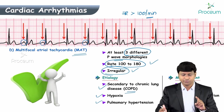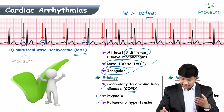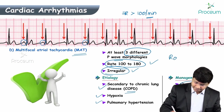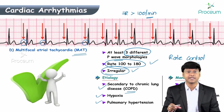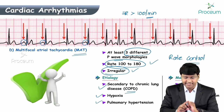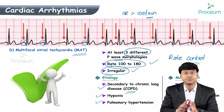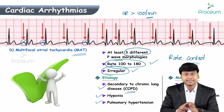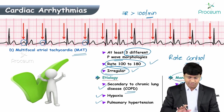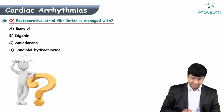Management of MAT: first and foremost, oxygen therapy, then treat the underlying condition, and rate control. To recap: MAT criteria require more than three different P wave morphologies, heart rate 100 to 180 per minute, irregular rhythm; most common etiology is COPD, then hypoxia and pulmonary hypertension; management includes oxygen therapy, treating the underlying condition, and rate control.